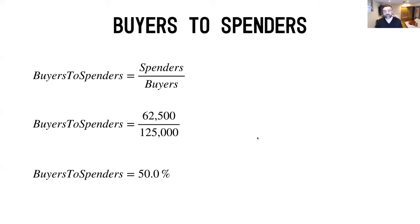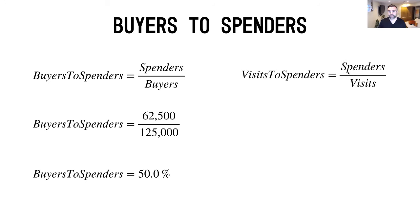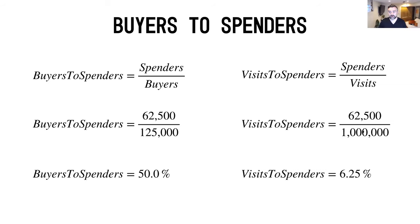If you do the math cumulatively from the total top of the funnel, we get visits to spenders: 62,500 over a million gives a visit-to-spender rate of 6.25%. We're close to that 3% overall conversion rate — the aspirational target many strive for in the Amazon world. That's essentially how we calculate the buyers-to-spenders conversion rate.